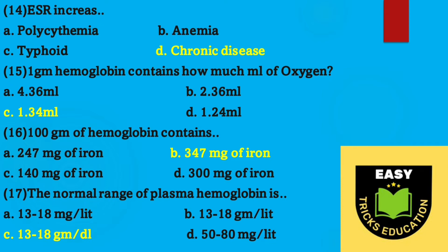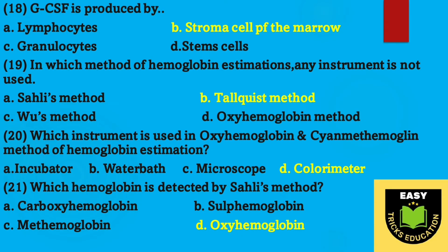Question number seventeen: the normal range of plasma hemoglobin is — option C, 13 to 18 grams per deciliter, is the correct answer. Question number eighteen: G-CSF is produced by — option B, stroma cell of the marrow.